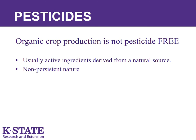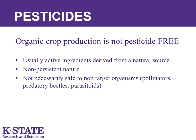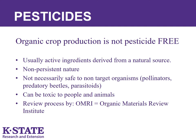I am often asked about organic produce and what that means. Often people assume that organic produce has not been treated with pesticides, but this may not be the case as there are organic pesticides. Such products usually have active ingredients derived from a natural source and of a non-persistent nature. However, they are not necessarily safe to non-target organisms such as pollinators, predatory beetles, or parasitoids, and can be toxic to people and animals. These products go through a review process by OMRI, the Organic Materials Review Institute.